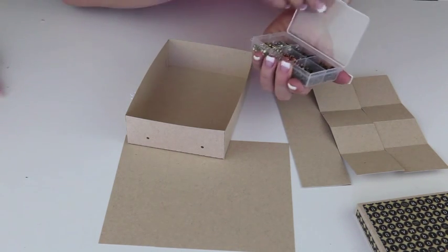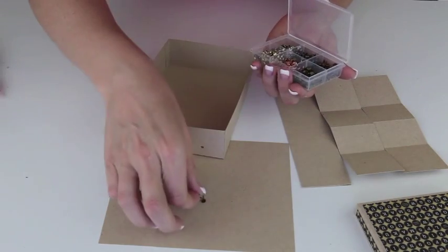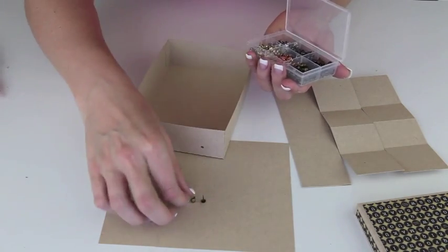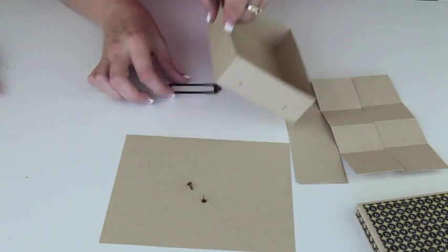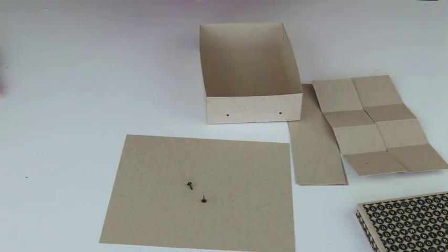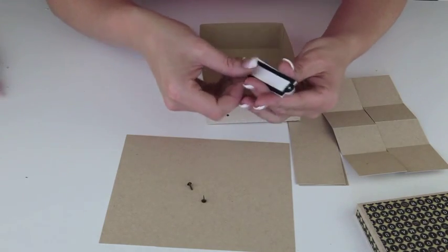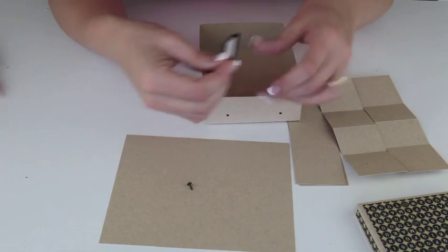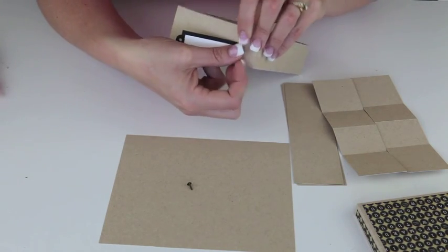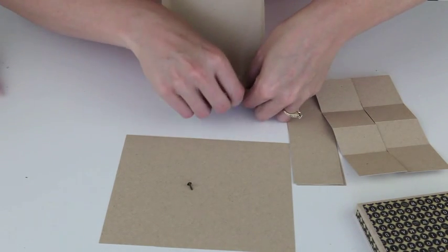So I have a little set of brads. I think I'll pull out these little kind of bronze looking ones. So I will line up my front and my back piece and the holes and then the holes on the box as well. And just open up my little brad inside.